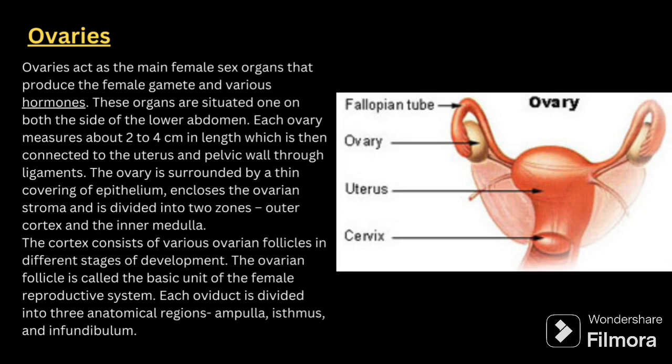Next come the ovaries. The ovaries act as the main female sex organs that produce the female gametes and various hormones. These organs are situated one on both sides of the lower abdomen. Each ovary measures about 2 to 4 cm in length and is connected to the uterus and pelvic wall through ligaments. The ovary is surrounded by a thin covering of epithelium and is divided into two zones.